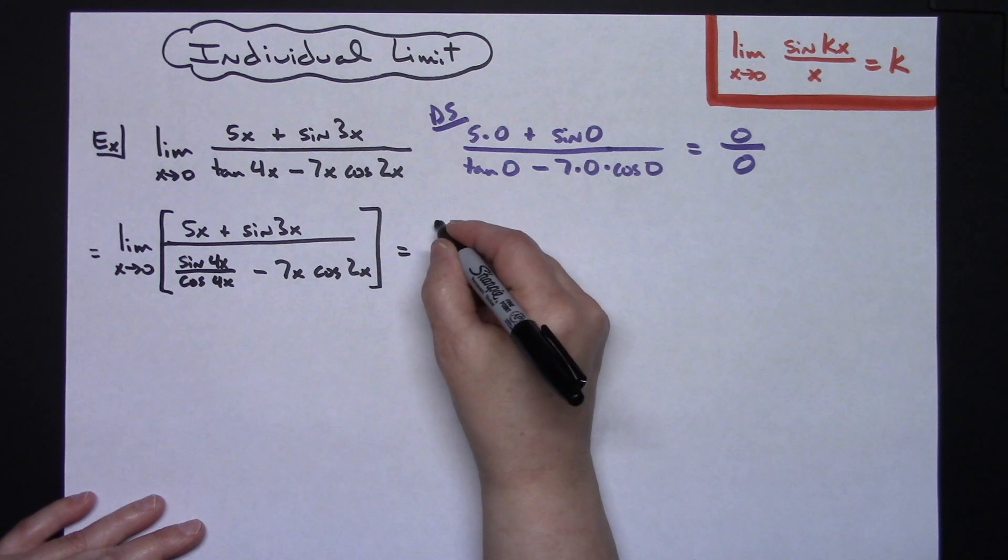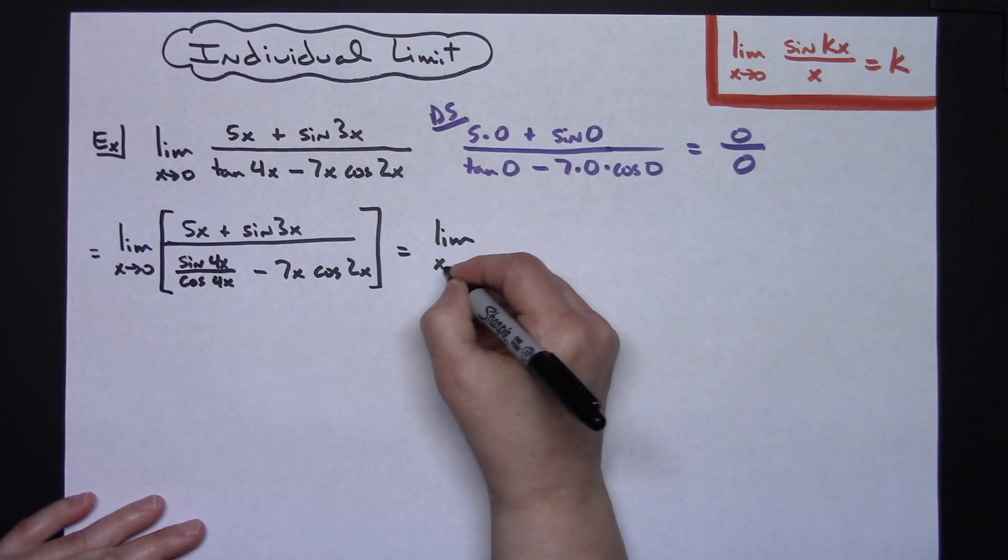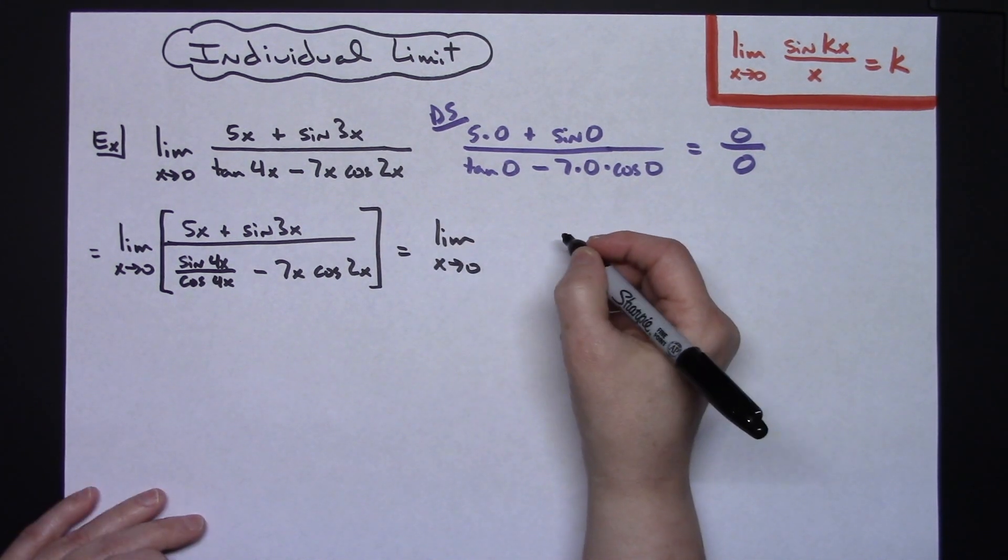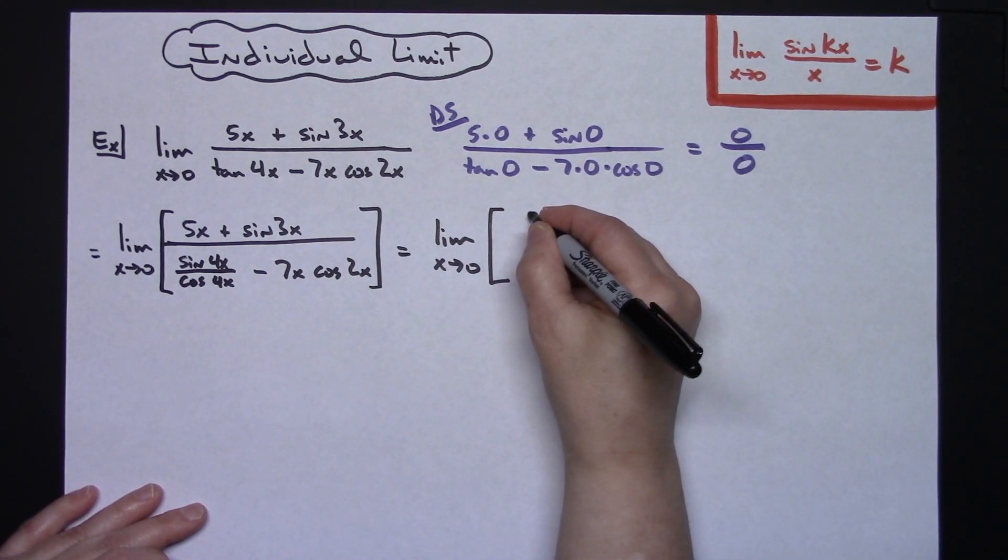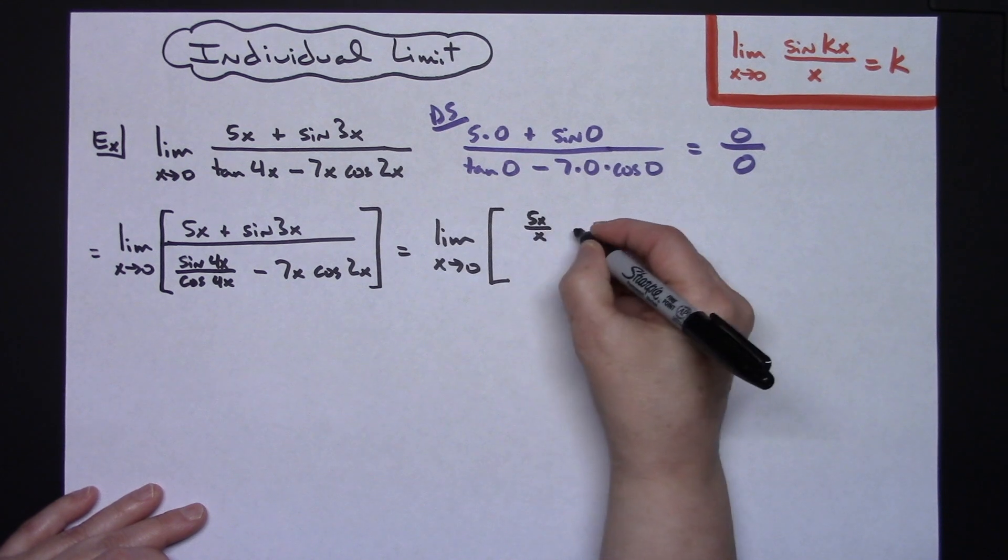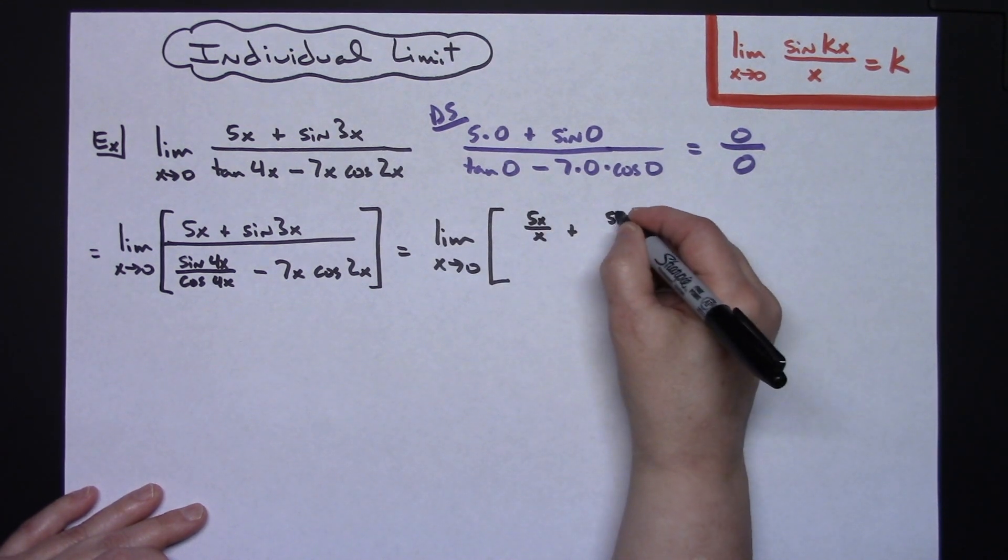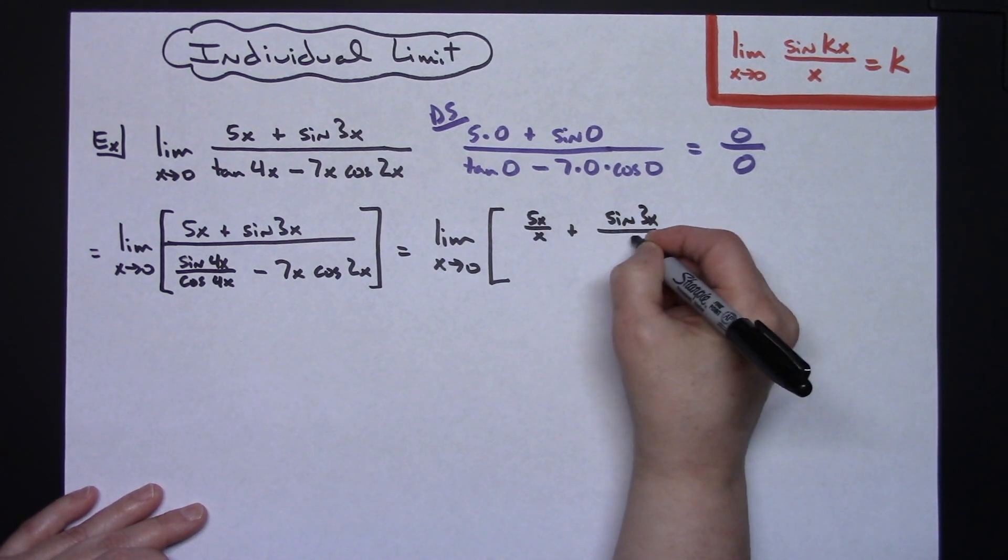So then that's going to be the limit as x approaches 0. And I'm actually going to show the division throughout the whole entire thing. So in this numerator, I'll have a 5x over x plus a sine of 3x over an x.